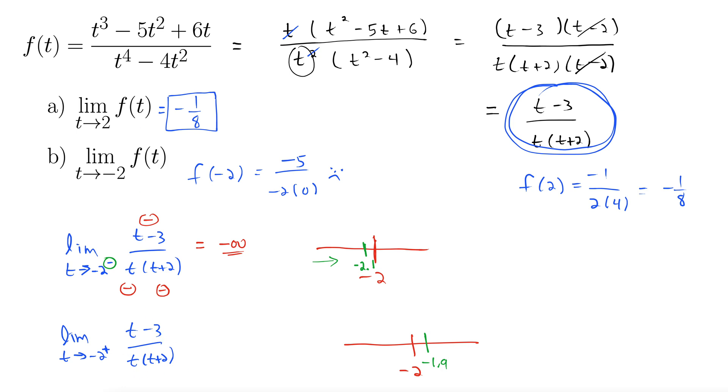So plugging in negative 1.9 and seeing what happens. Well, here up top we have negative 1.9 minus 3, so that's still going to be negative. Just plugging it in for t, that's going to be negative. Negative 1.9 plus 2, however, is now going to be positive. So we have negative divided by a negative and a positive. That gives us a positive infinity.